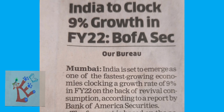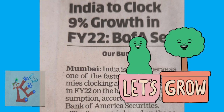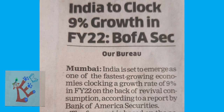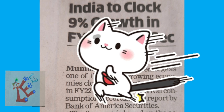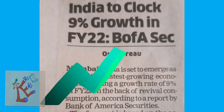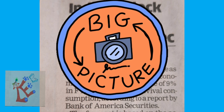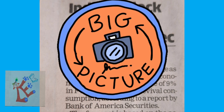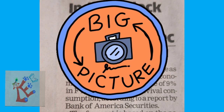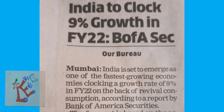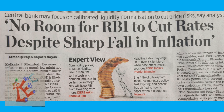Now let's look at macroeconomics news. The first headline: 'India to clock nine percent growth in financial year 2020.' This is a report by Bank of America Securities, which says that because of increased aggregate consumption, India becomes one of the fastest growing economies with a real GDP growth rate of nine percent. This is clearly a macroeconomics news item, talking about aggregate consumption and national income growth.